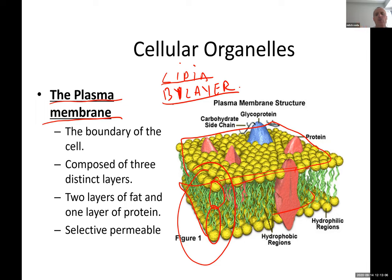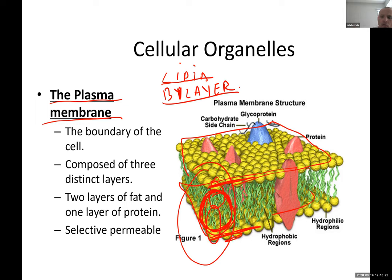The two layers of the lipid bilayer are arranged so the fat tails face inward and the hydrophilic heads face outward. Hydrophilic means it loves water. The plasma membrane is specifically made up of phospholipids — it is a phospholipid bilayer.